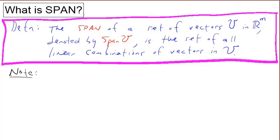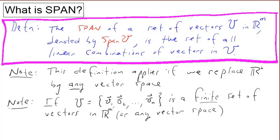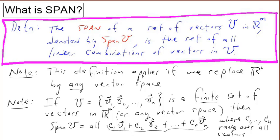Note that this definition also applies if R^m is replaced by any vector space. And note that if V equals {V1, ..., Vn}, a finite set of vectors in R^m or any vector space, we can write span as the set of all C1·V1 + C2·V2 + ... + Cn·Vn, where C1 through Cn range over all scalars — that is, all real numbers. That's just explicitly writing down what is meant by linear combination.